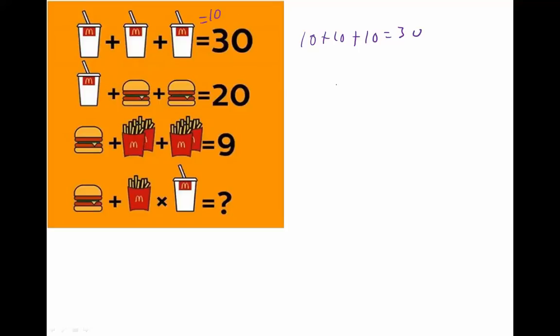So then we go to the next line using the information that we just figured out. We can say that this is 10 plus, and then we've got two burgers. Those burgers are identical, so that's the only way to make this happen would be if the burgers were 5. So the burgers got to be equal to 5.